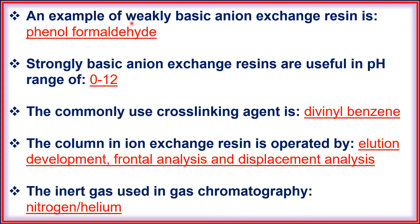An example of a weakly basic anion exchange resin is phenol formaldehyde. Strongly basic anion exchange resins are useful in a pH range of 0 to 12. The commonly used cross-linking agent is divinyl benzene.